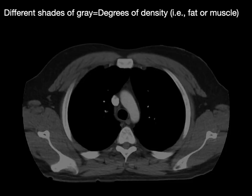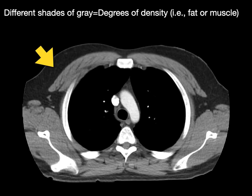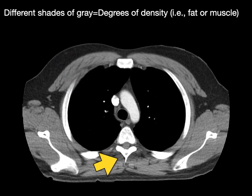The different shades of gray show varying degrees of density and attenuation. Fat shown in the subcutaneous tissue has a lower attenuation than the pectoralis major muscle, which is a little more dense but not as dense as bone. There are also paraspinal muscles visible.